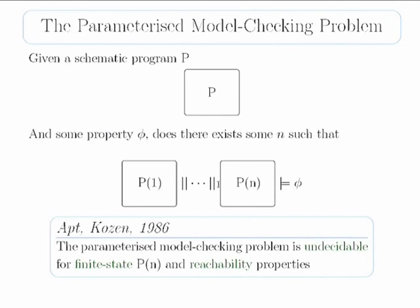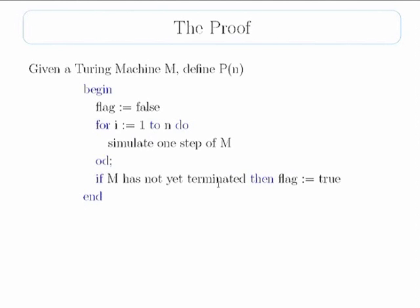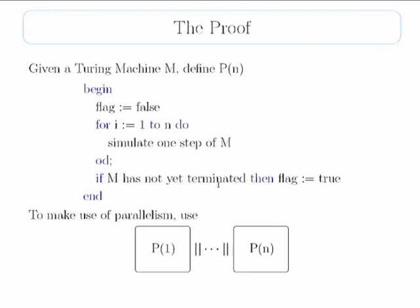It was shown by Apt and Cosen in 1986 that this problem is undecidable, and that holds even if each particular P_N is finite state. The reason is simple: if you take a Turing machine and say your N-th program is the finite state machine that runs the Turing machine for N steps — in N steps you can only use N cells of your tape, so you have a finite state machine — then when N becomes a parameter and you ask 'does there exist an N?', you're asking whether the machine terminates in N steps. You're solving the halting problem, so you're immediately undecidable.